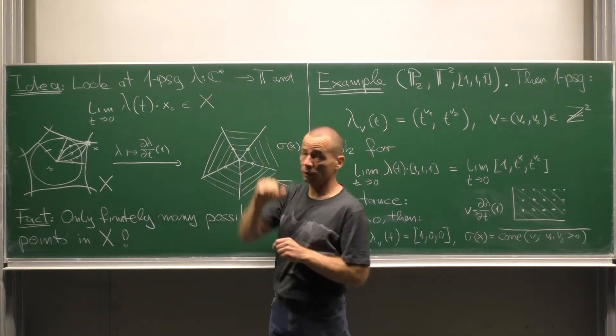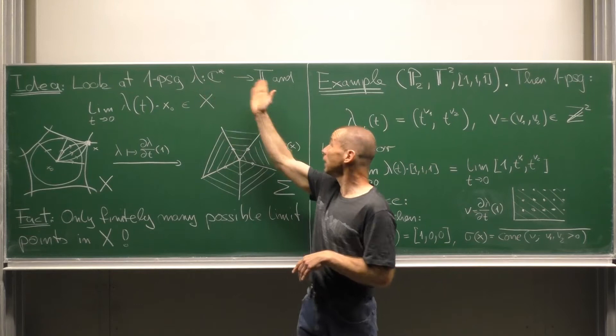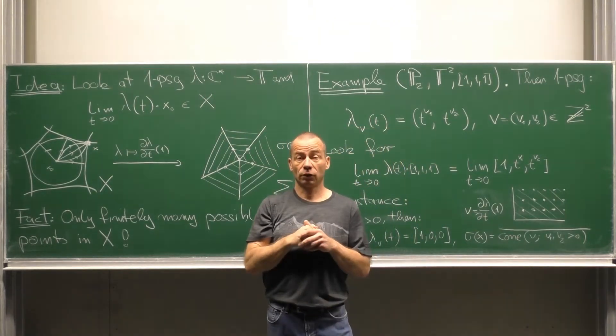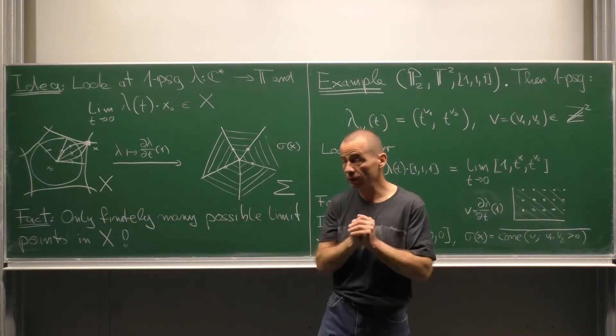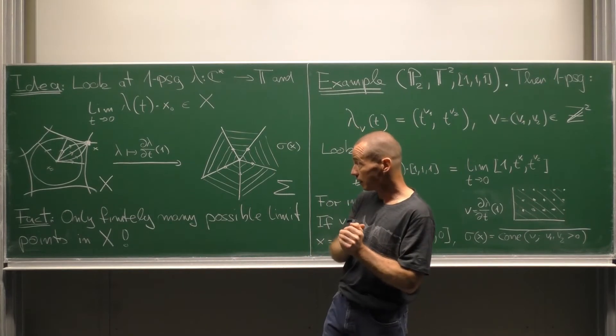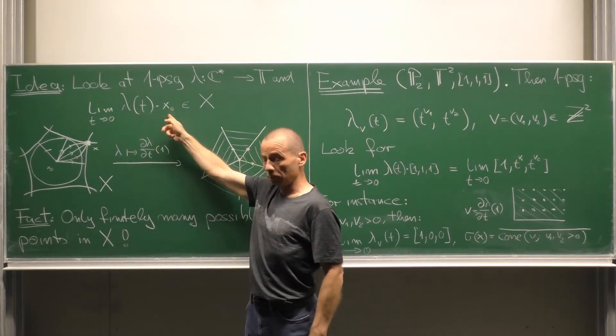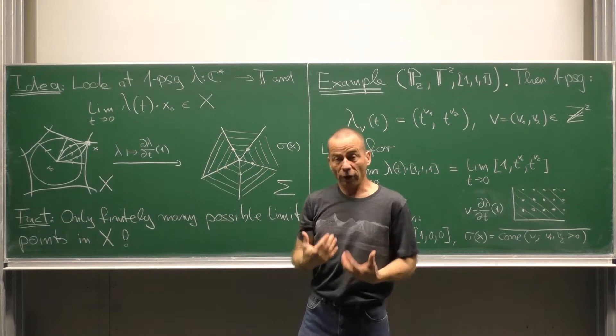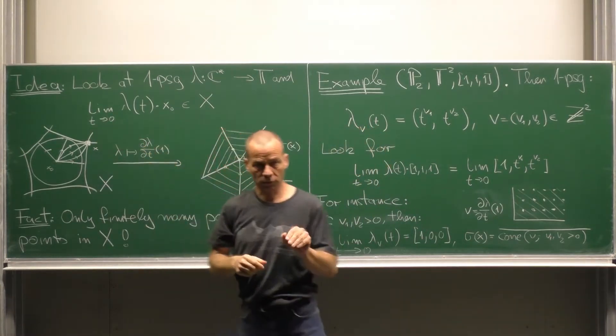The key is to look to one parameter subgroups, that means homomorphisms lambda from C star to the acting torus T, and to ask for possible limit points in the following sense. Apply lambda of T to the base point X0 of X and then ask what happens if the parameter T tends to zero.